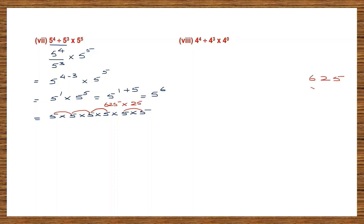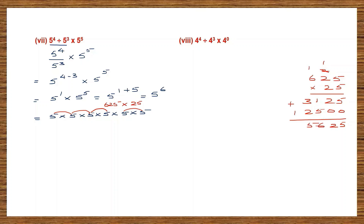Now let's compute 5 to the power of 6: 625 into 25. So 625 × 25: 5 fives are 25 carry 2, 5 twos are 10 plus 2 is 12 carry 1, 5 sixes are 30 plus 1 is 31; then 2 fives are 10 carry 1, 2 twos are 4 plus 1 is 5, 2 sixes are 12. Adding up gives 15,625. So the answer is 15,625.